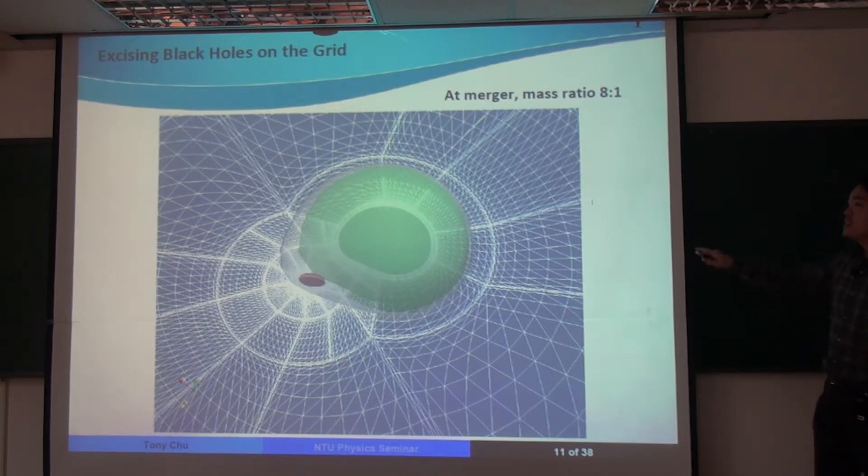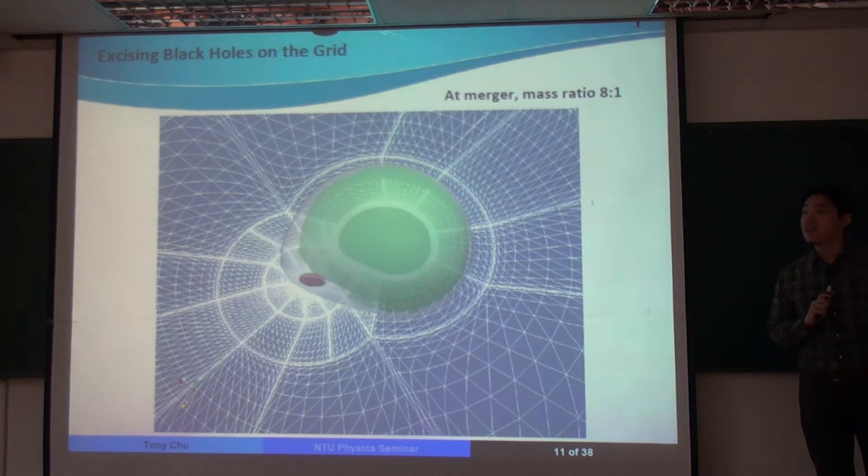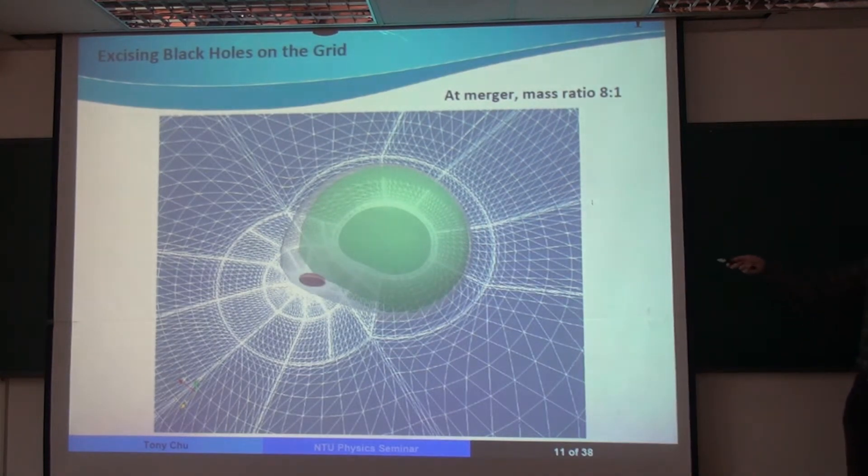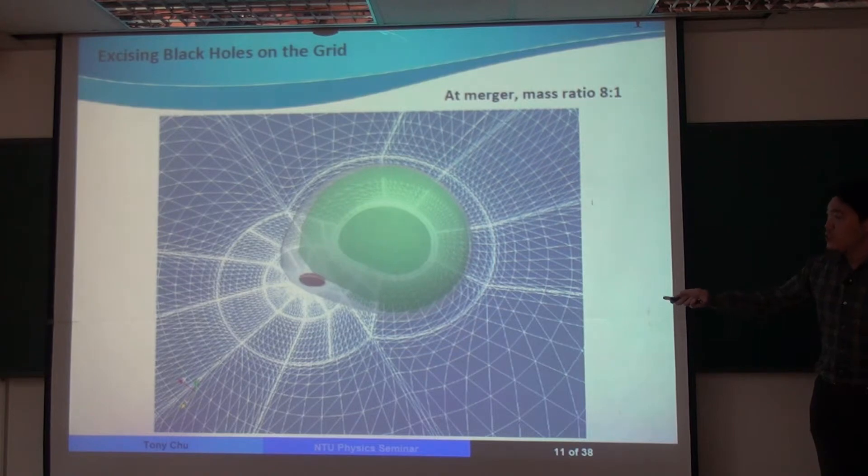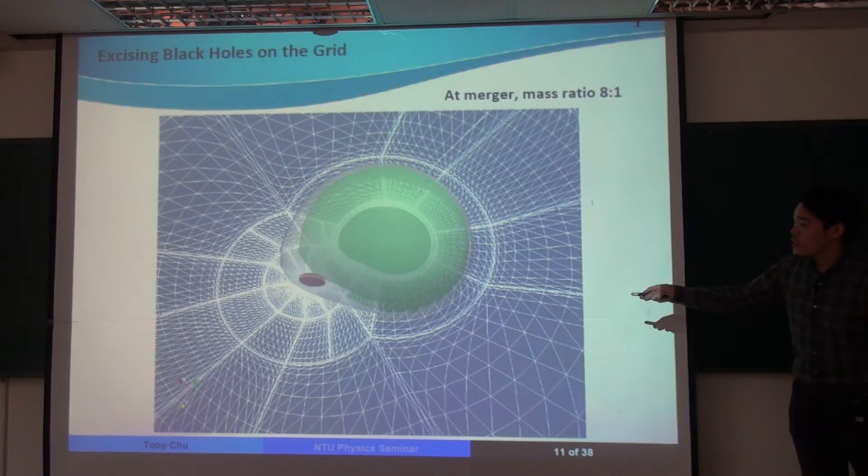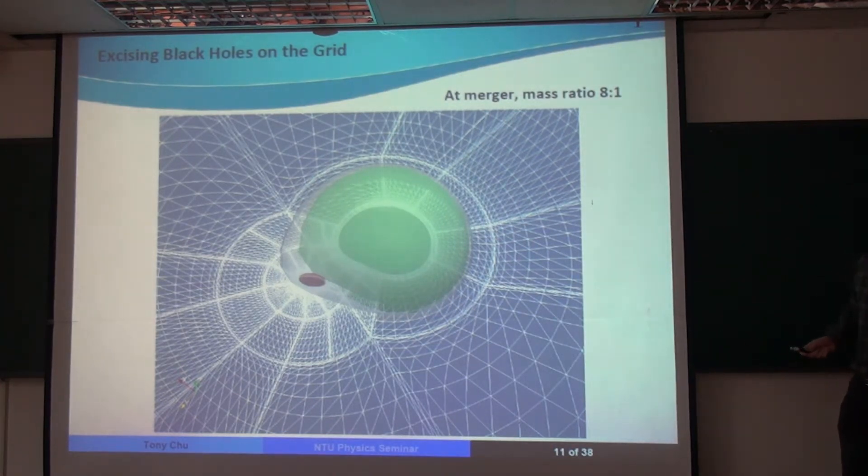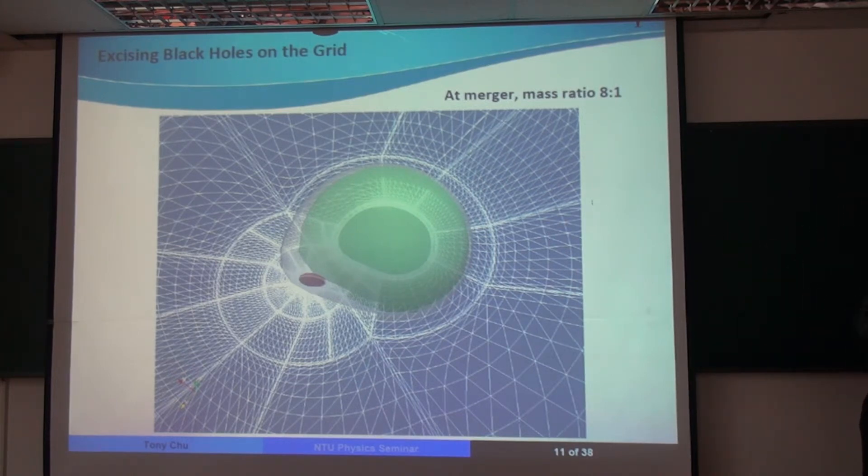And you can see that inside of it, there's a part of the computational domain that's been cut away. And that's because inside of these black holes, there are spacetime singularities. And if we were to keep them on our computational grid, that would definitely give us problems. So we cut it out. We cut it out of our computational domain. And the boundary is called the excision boundary, and cutting this out is called black hole excision. And this excision boundary is inside the horizon, because anything we do inside of a black hole horizon doesn't affect physics outside of a black hole horizon.